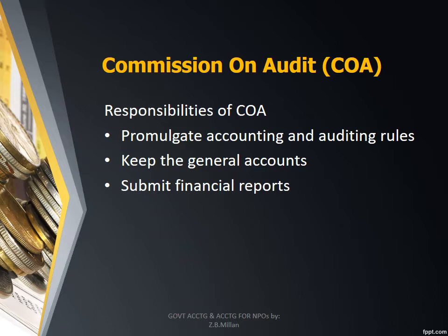Lastly, the COA is responsible for the submission of financial reports to the President and Congress within the time fixed by law — not later than the last day of September each year, as provided in Section 41 of PD 1445. The report passed is an annual report of the government, its subdivisions, agencies, and instrumentalities including government-owned or controlled corporations. The COA consolidates all reports of government agencies and instrumentalities.